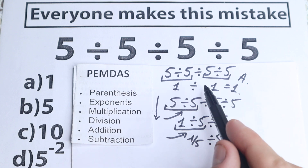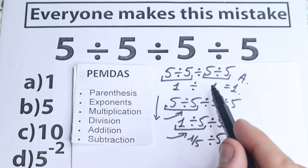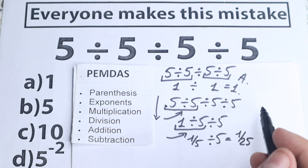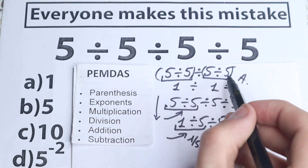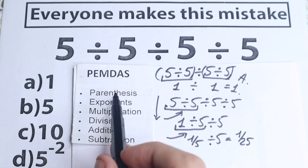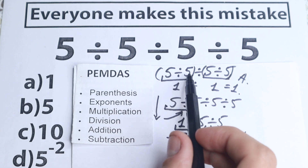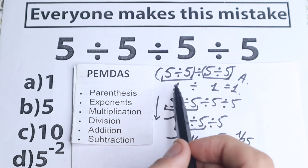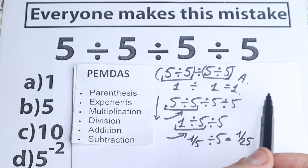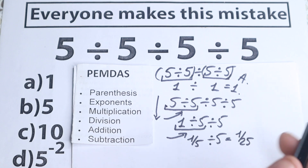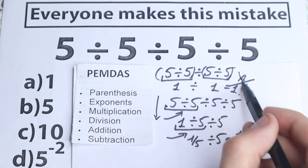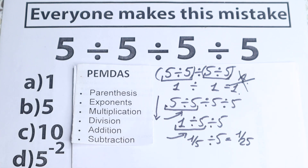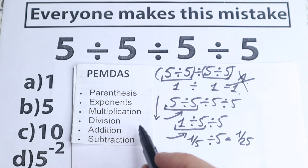Let's go back to the first solution and explain why it is incorrect. If you put parentheses around each pair — (5÷5) and (5÷5) — then we would get 1, and option A would be correct, because we start from the parentheses. But in our problem we don't have those parentheses, so we reject option A — it is incorrect according to PMDMC.